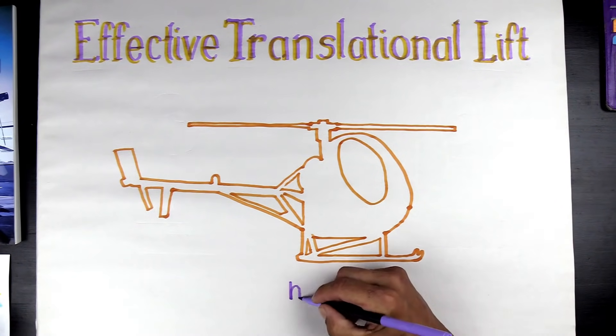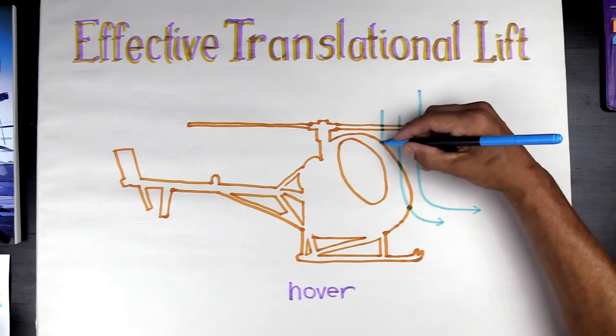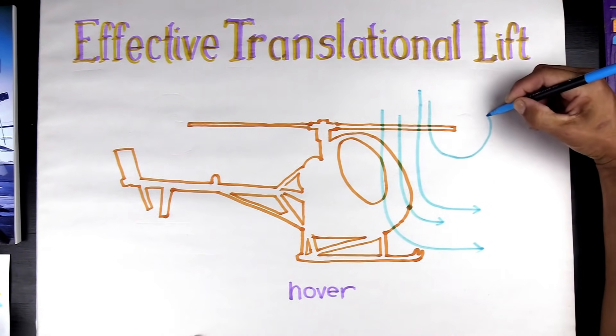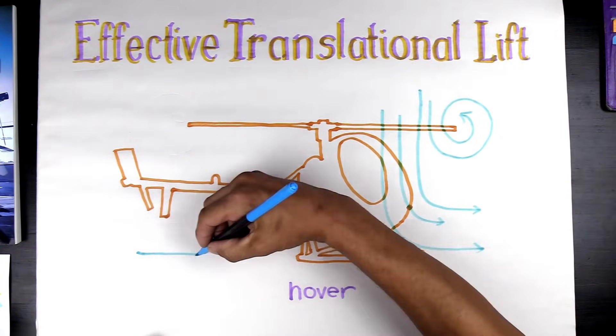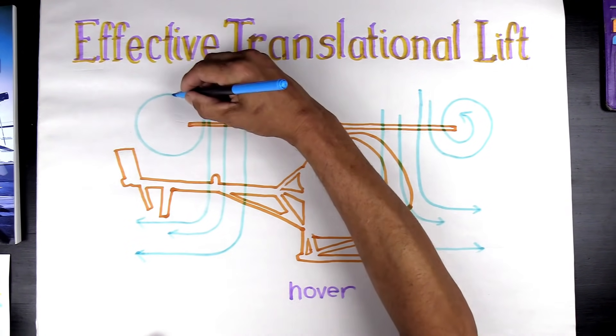Step one: we are just in a hover. Everything is pretty uniform, air is coming down like this, got our vortices, we're in ground effect. That's kind of our starting point.